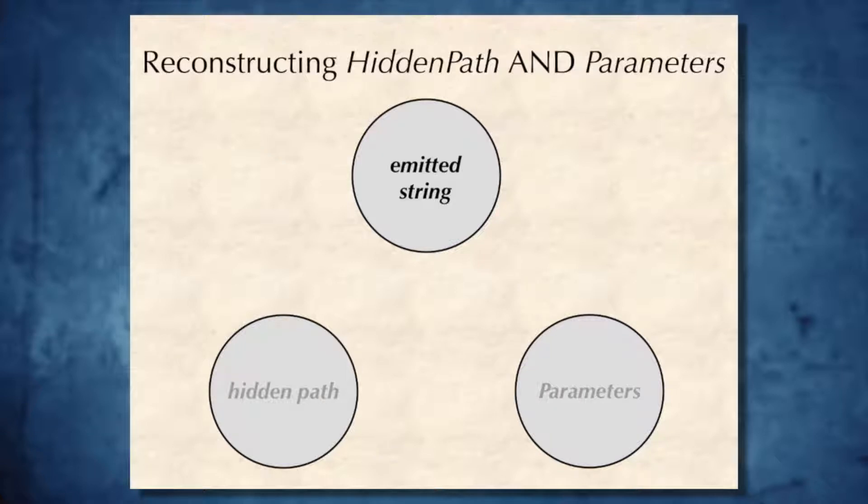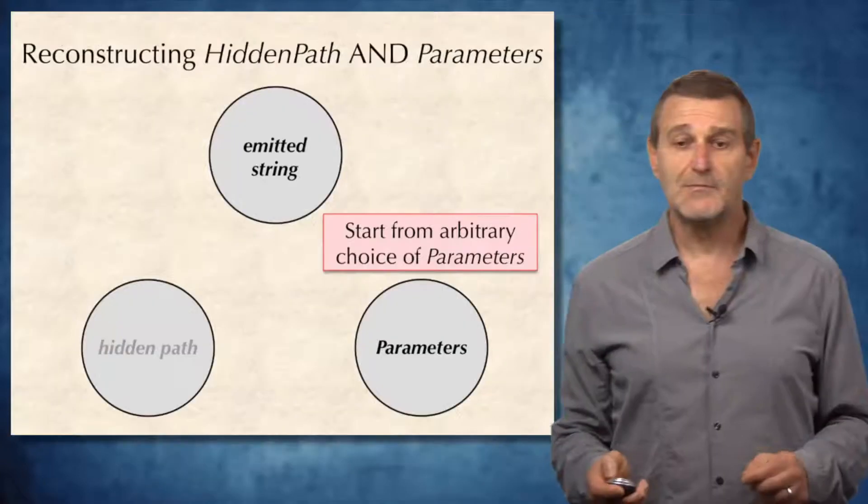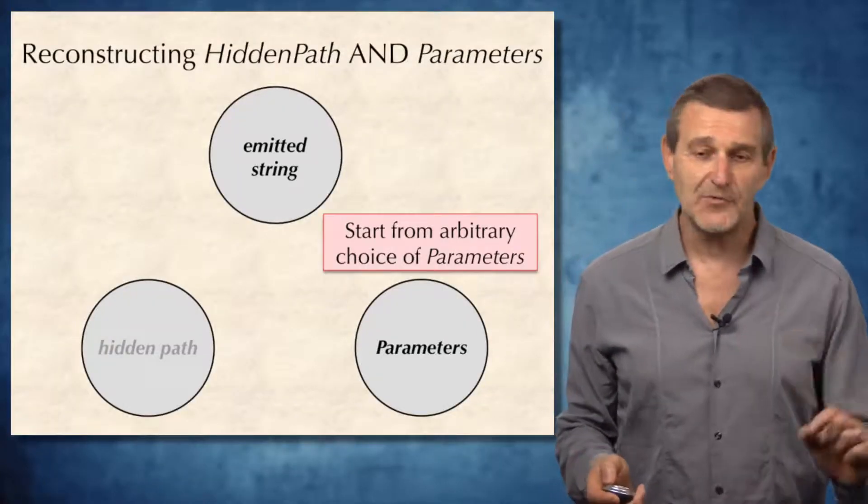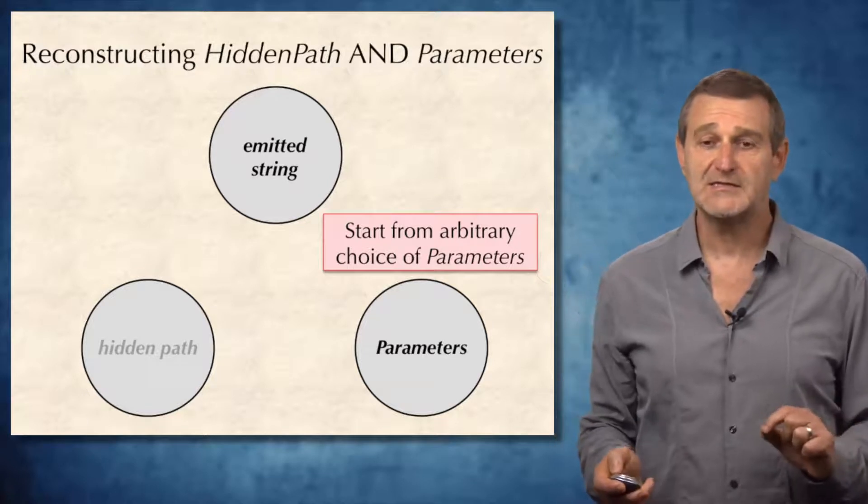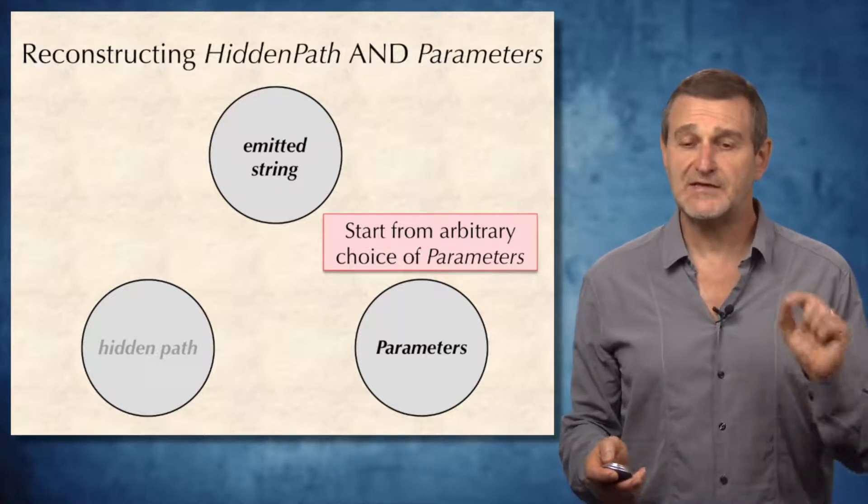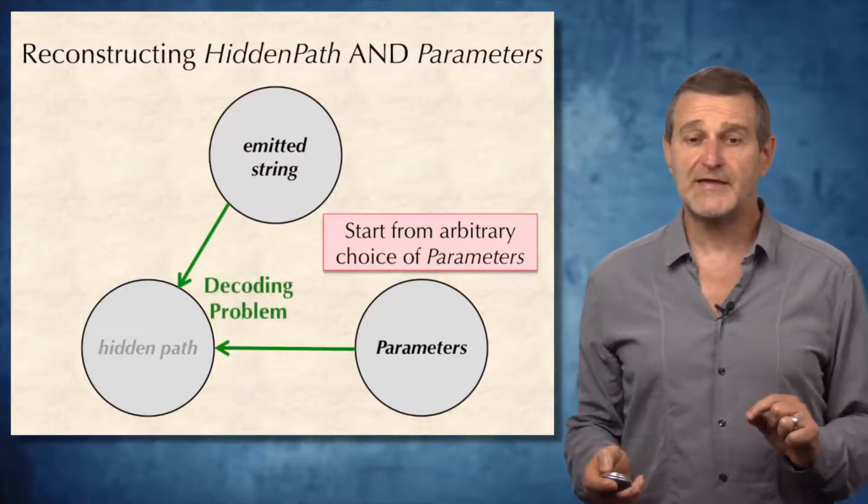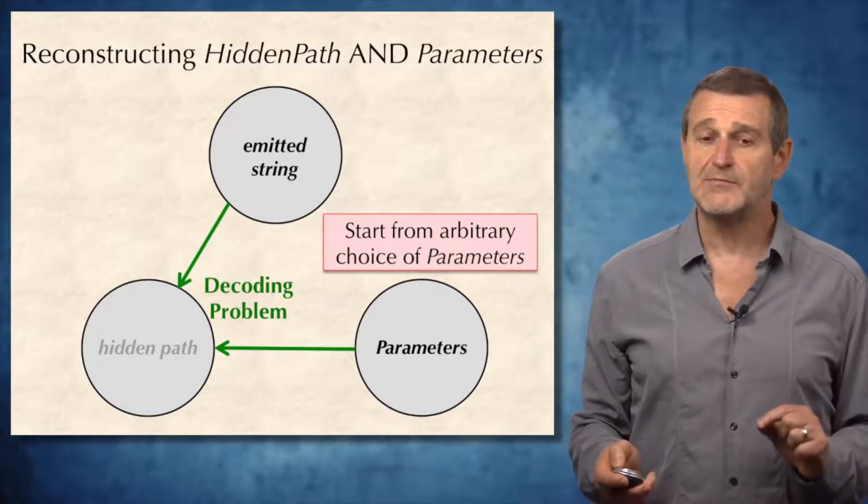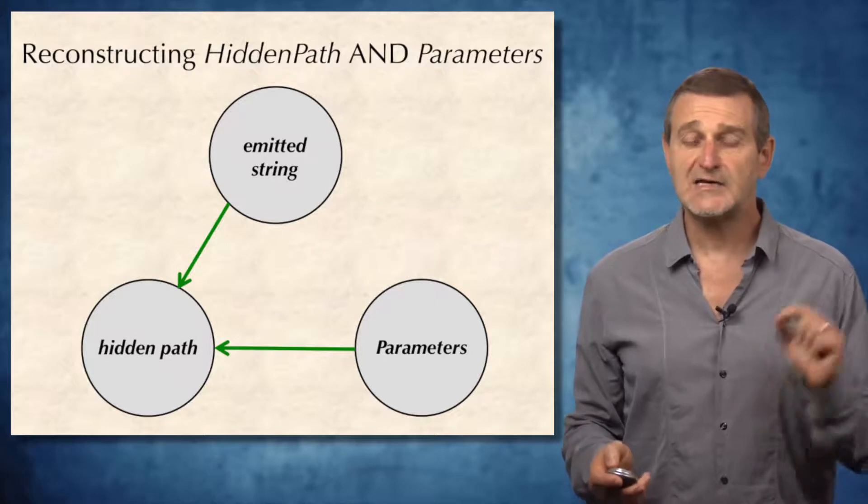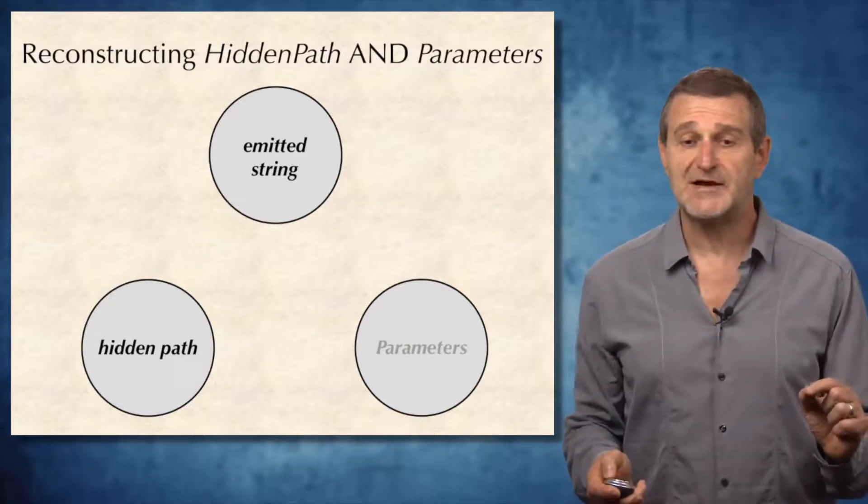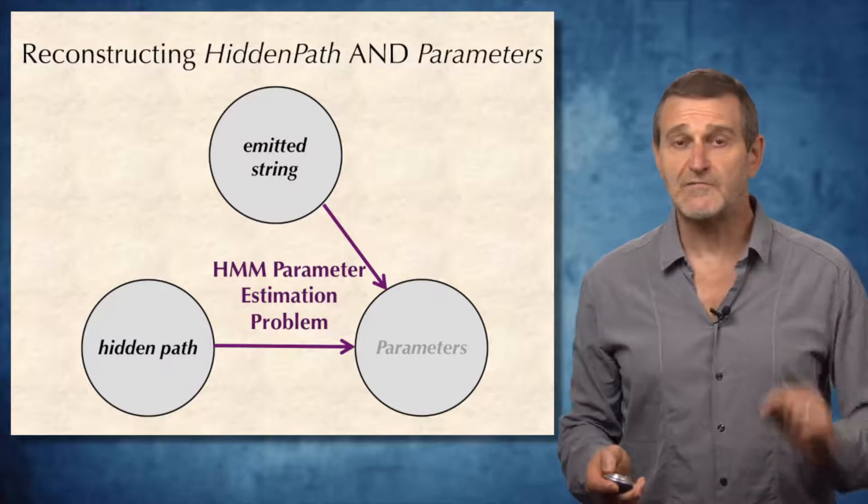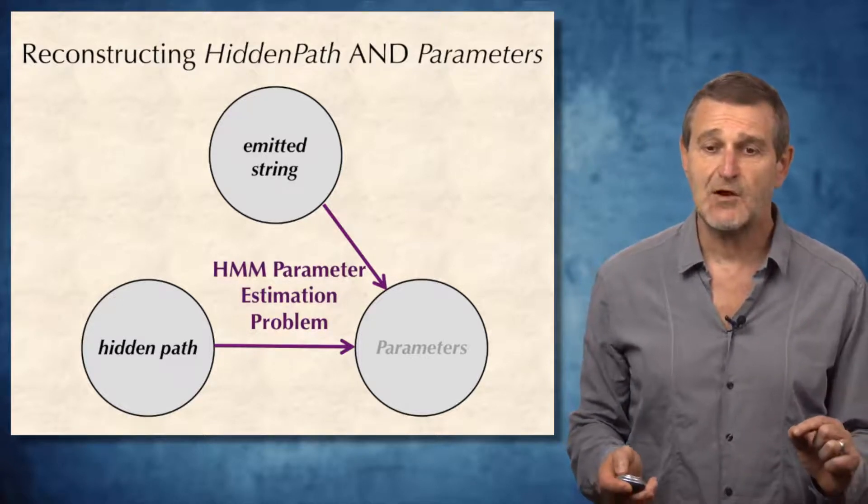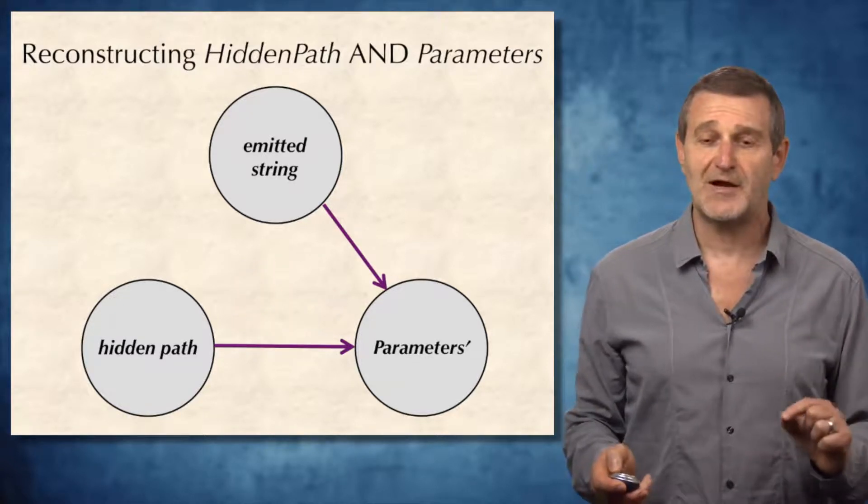So, let's try the following algorithm for solving this problem. We are only given the emitted string, but let's start from an arbitrary wild guess of parameters. As soon as we guess the parameter, we can derive hidden paths by solving the decoding problem. As soon as the hidden path is known, we can pretend that we don't know the parameter, and we can solve the HMM parameter estimation problem deriving a new set of parameters.